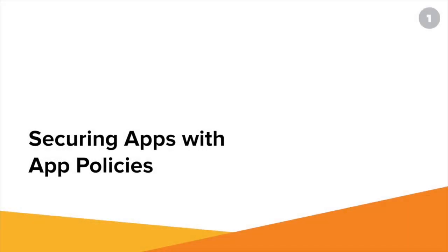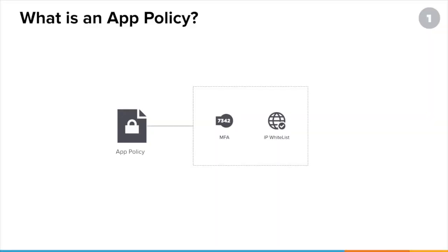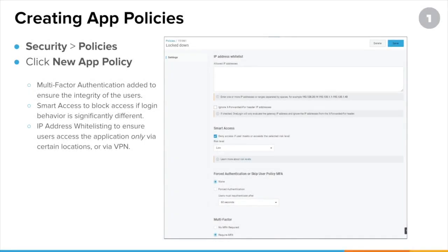Before we actually assign our users to applications, we might want to think about whether we need any additional security measures — that's where app policies come in. We mentioned app policies back in the last module when talking about user policies. App policies are similar to user policies but much simpler in their design. They control whether a user is prompted for MFA before accessing an application, or restrict access to users coming from a secured network like a corporate network or VPN.